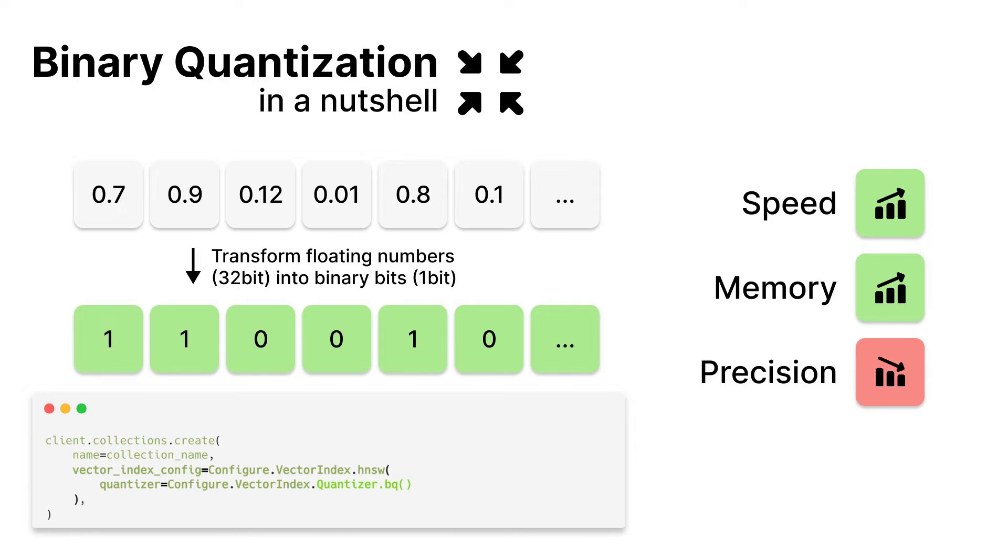Binary quantization for embeddings, unlike quantization in models where you reduce the precision of weights, quantization for embeddings refers to a post-processing step for the embeddings themselves.